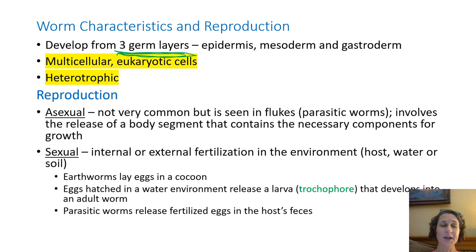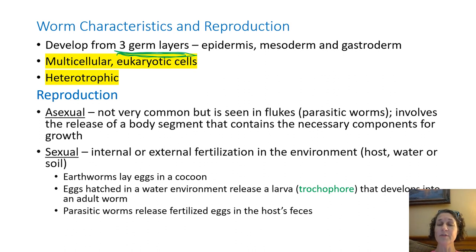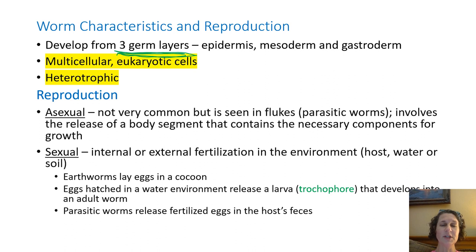If you're outside taking a walk and you look down on the sidewalk, you're going to see lots of worms in all different shapes and sizes. The baby earthworms are cute little worms that are just now hatching from these cocoons. Eggs hatched in a water environment release a larva — it's usually thicker in the body, not as thin as a worm will eventually become, but that larva will develop into the adult. In this form, that larva is called a trochophore.